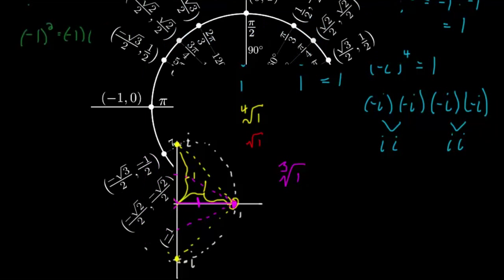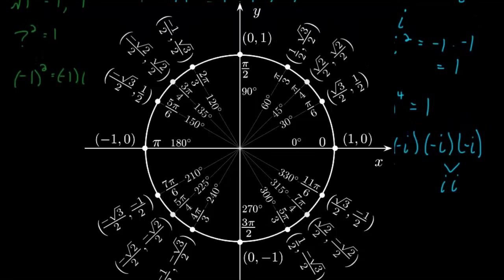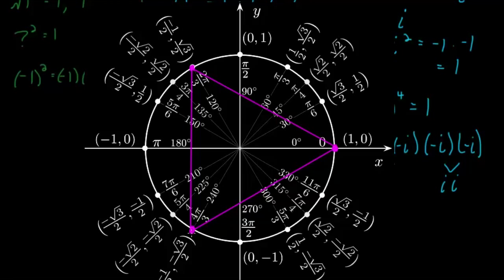Using the unit circle, I can find the values of these points. Here are the three vertices of the triangle. Using sine and cosine, the angle to the upper-left vertex is two pi over three — or tau over three. The x-coordinate is our real component — cosine of that angle — and the y-coordinate is our imaginary component — sine times i. That gives us negative one-half plus square root of three over two times i.